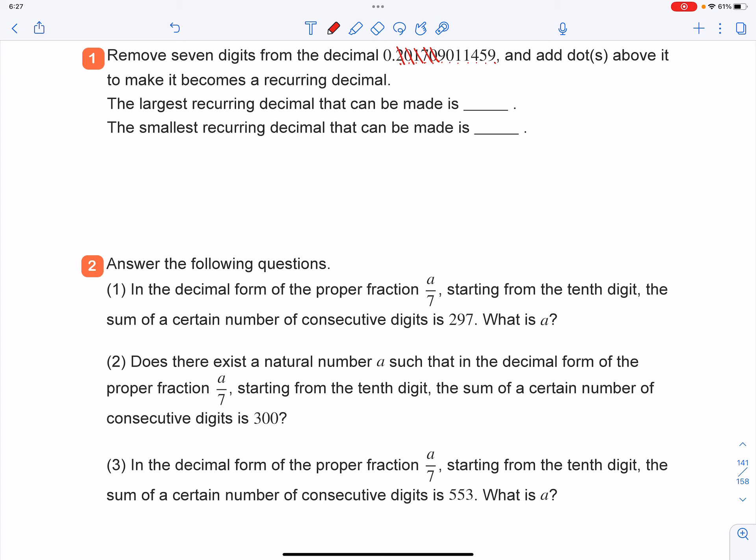And we still need to remove two more, right? So if you want to remove two more, I'd like to remove this zero and this one, because that way I will make this number as big as possible.